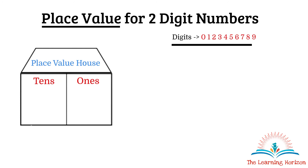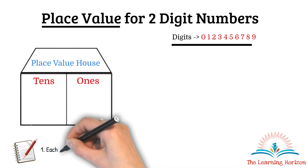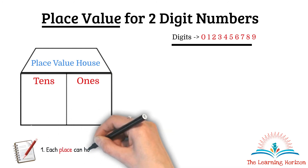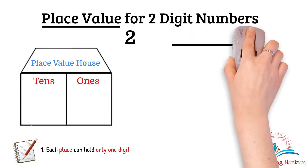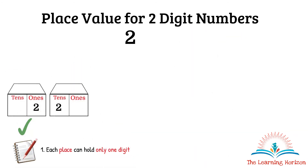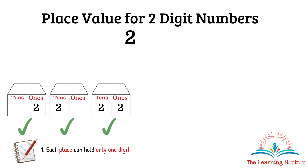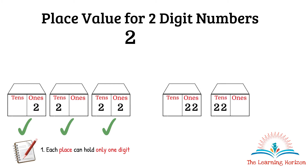This house has a rule: each place can hold only one digit. For example, we can place the digit 2 in the ones place, or in the tens place, or have different digits in both tens and ones places. But having more than one digit in the same place is not allowed.